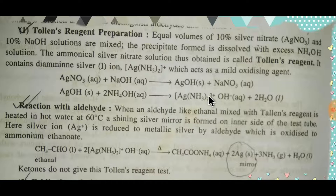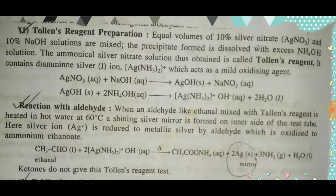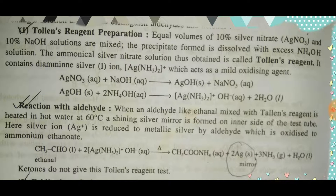If you observe this reaction, you will see that we get diamine silver ion. This diamine silver ion acts as a mild oxidizing agent. Now let's look at the reaction with an aldehyde.